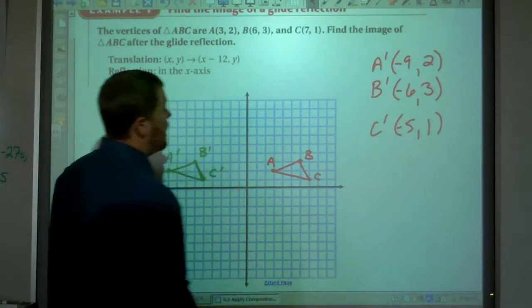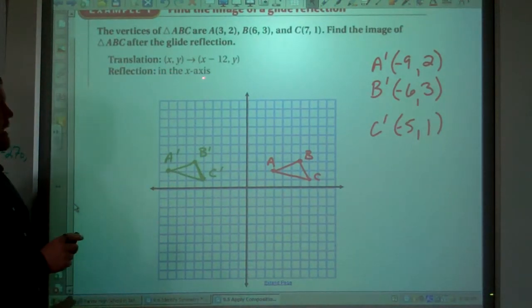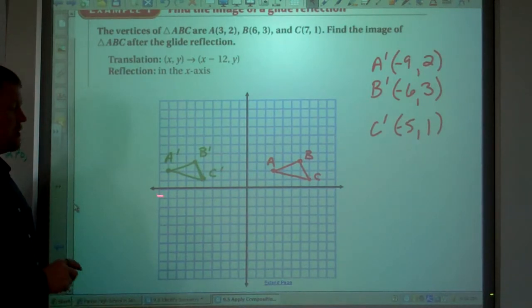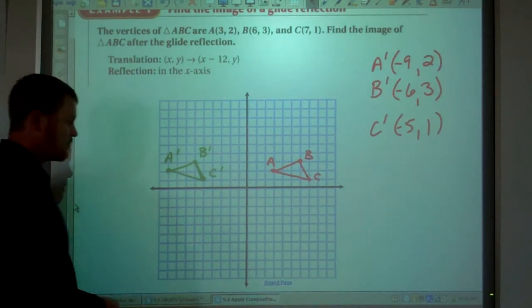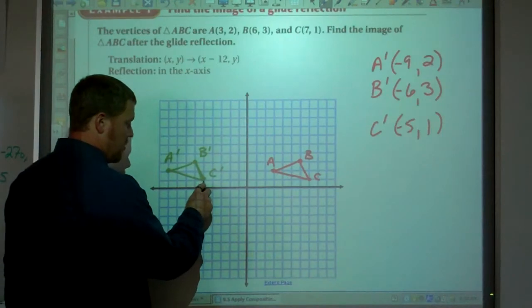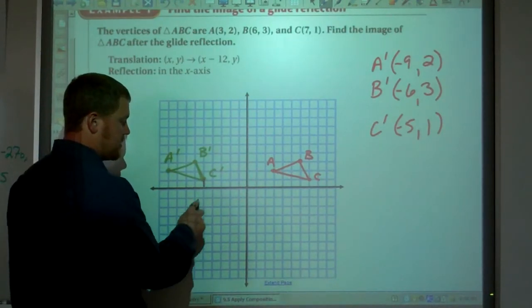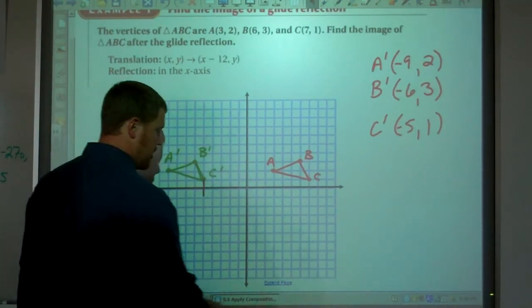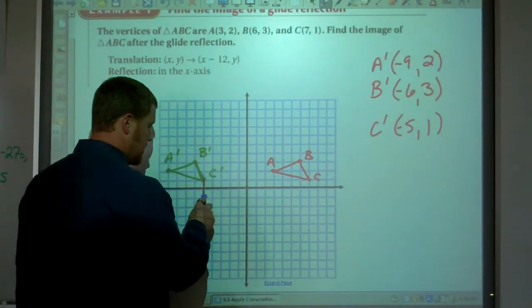Okay. And now we want to reflect it through the x-axis. And again, here's the x-axis. So we want to reflect it through there. So one point away from the x-axis. So it should be one point away from the x-axis. So there is C double prime.